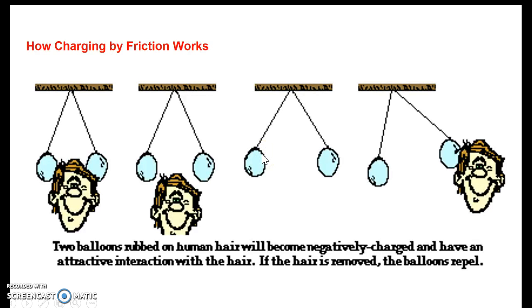Here's how charging by friction works. We take two balloons hanging here and we rub them on our hair. Balloons rubbed on human hair become negatively charged and have an attraction to the hair because the hair is positively charged due to polarization. The electrons jump to the balloons and make them negatively charged.